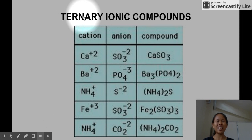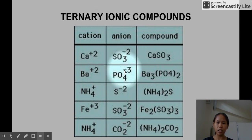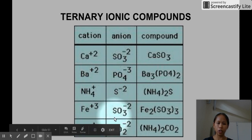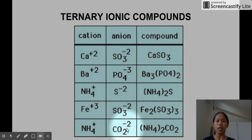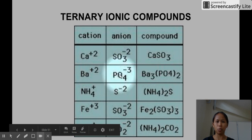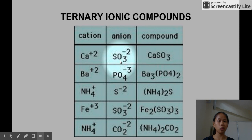Now let's go to ternary ionic compounds. When we say ternary, it involves the presence of polyatomic ions — it can be a cation or anion. A polyatomic ion looks like: sulfite, phosphate, ammonium, carbonate — these polyatomic anions and cations are composed of more than one type of element. There's no shortcut in memorizing these; you just need to be familiar with their names and chemical formulas.